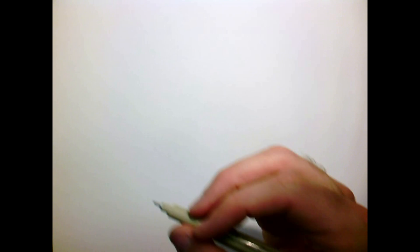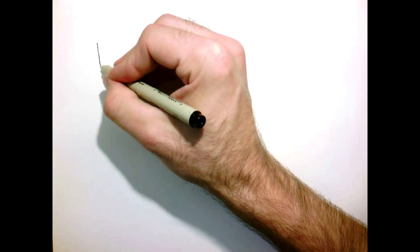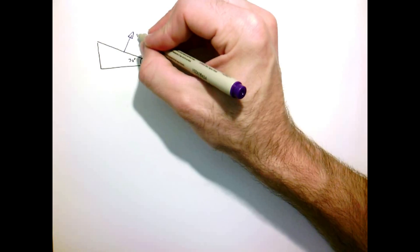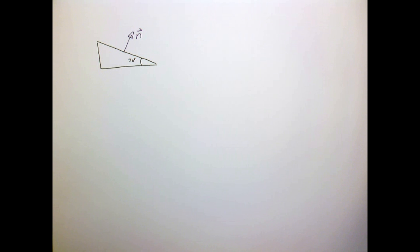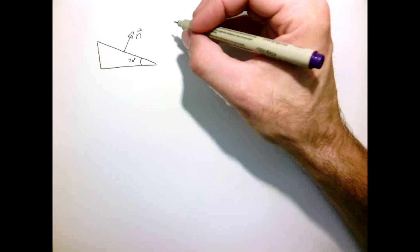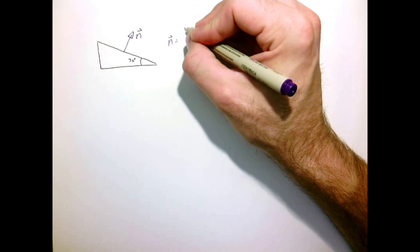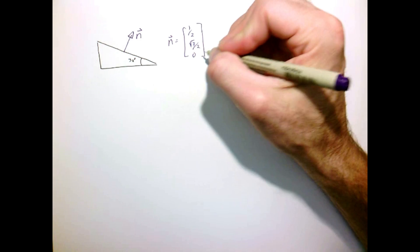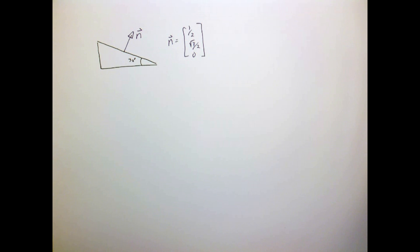Now let's consider a slightly more complicated example. Let's look at a surface that's inclined at 30 degrees, so therefore the normal vector is one-half, square root of three over two, and zero. So let's just write this out.